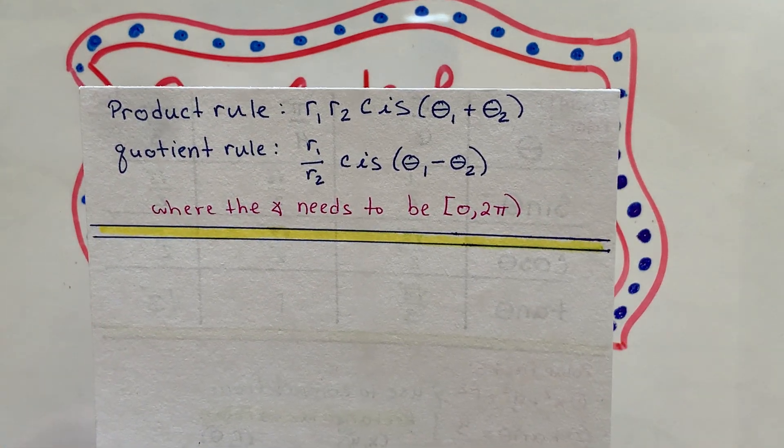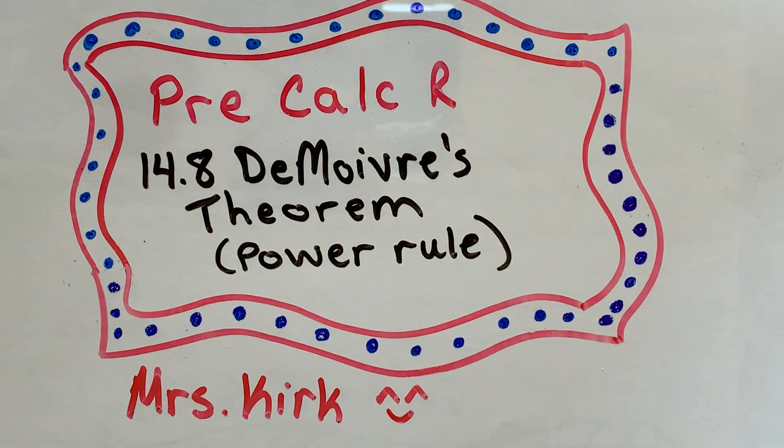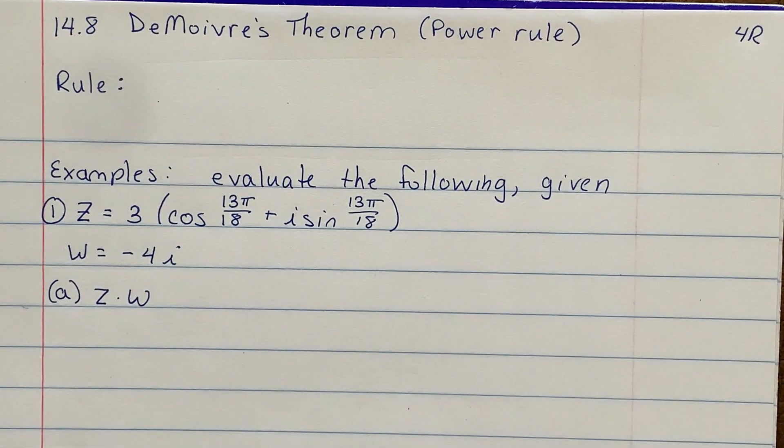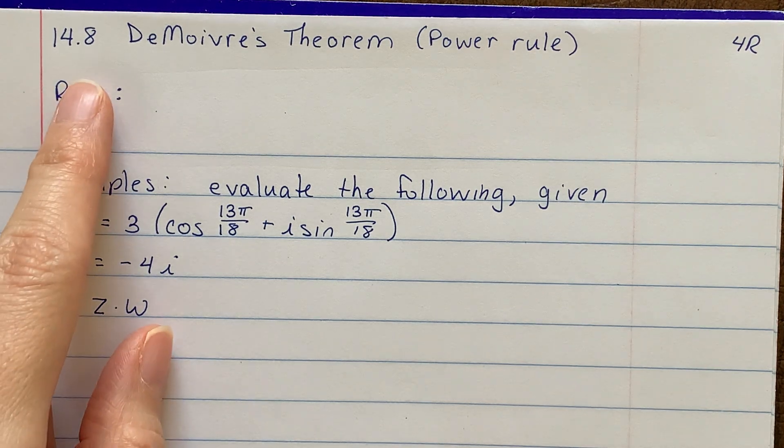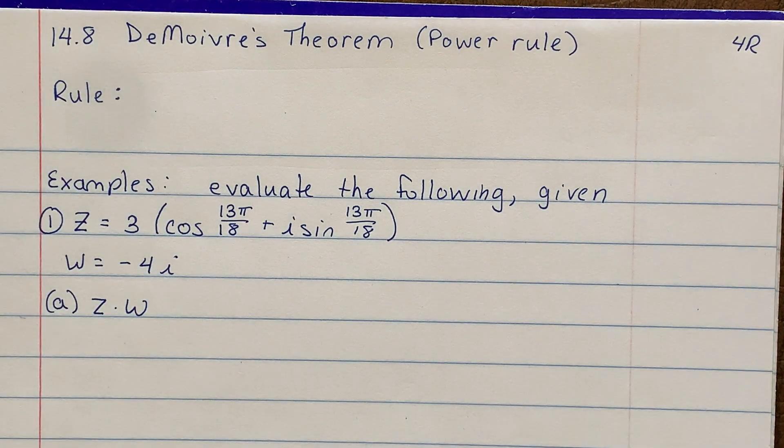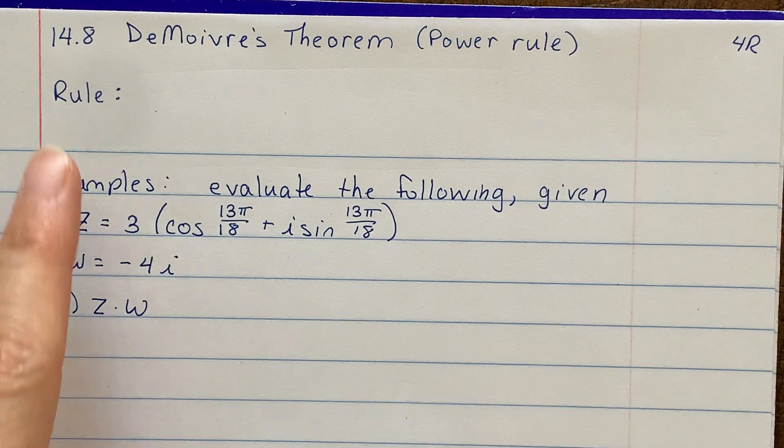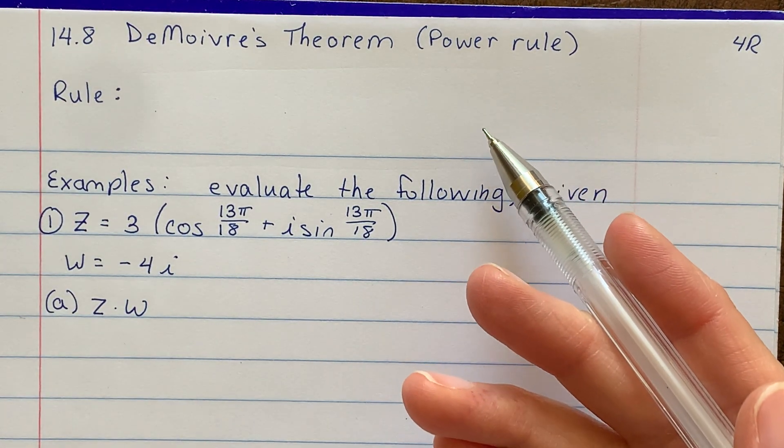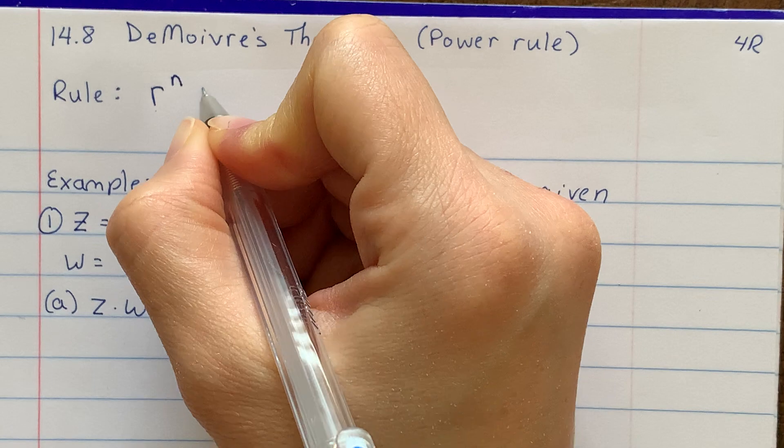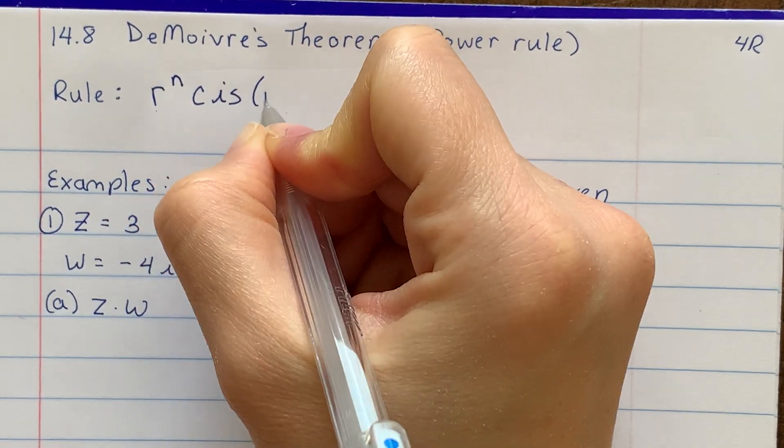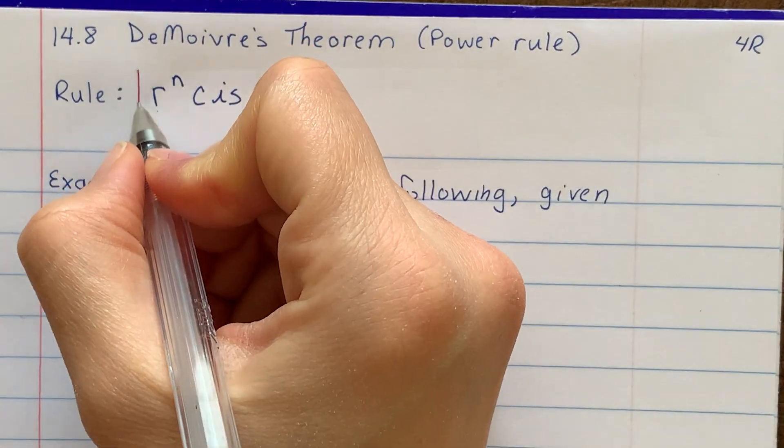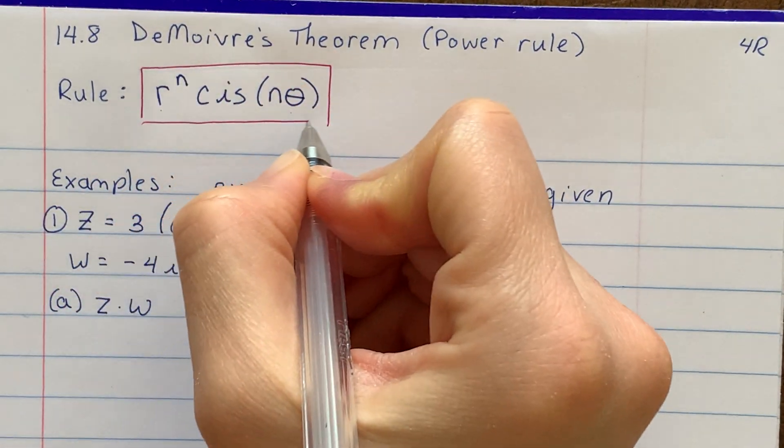So hopefully you took time to add that to your note card as well. If you feel like I'm moving too quickly, please take some time to pause the video and get yourselves caught up. So first of all, I've got my title here, 14.8. Please take a moment and add that to your table of contents. So what is the power rule exactly? Well, the power rule literally has a power in it, and it looks like this. It's r to the nth power cis n times theta.